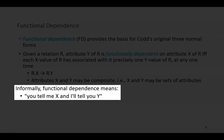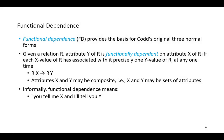Another way to phrase this — what might be easier to grasp the concept — is to say: if you tell me the value of x, then I can tell you the value of y. Note that a functional dependency is not a mathematical dependency. That is, if x functionally determines y, it does not mean that y can be computed from the value of x. It simply means that if you know the value of x, there can be only one value for y.